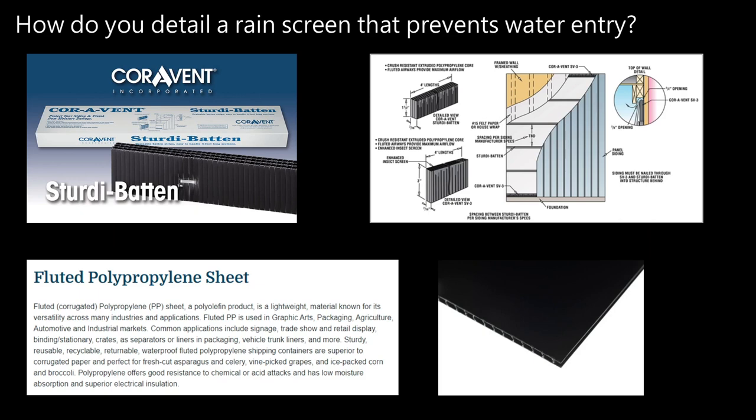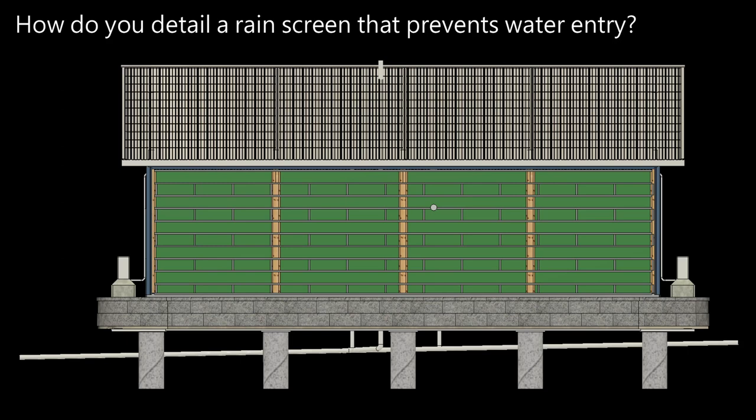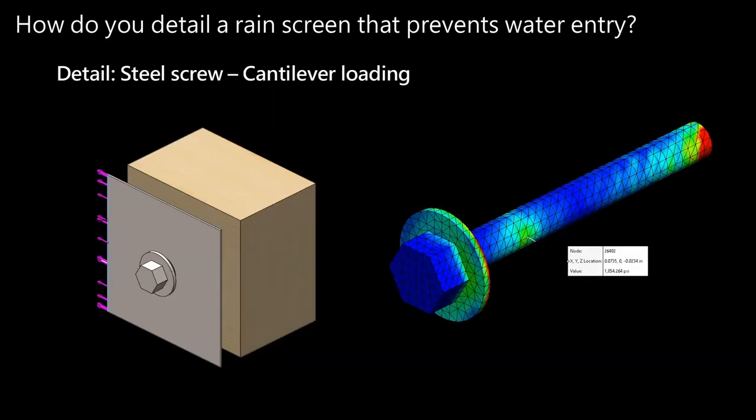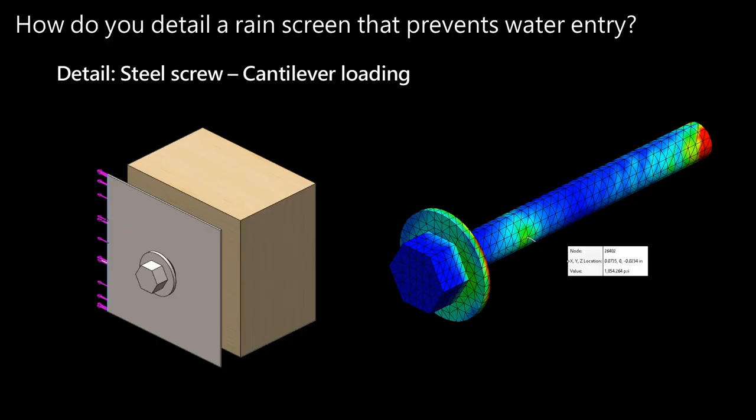For the custom rain screen details: a standard building can use Coravent sturdy batten, and for this build I plan to do something similar using a six millimeter corrugated polypropylene sheet. That goes behind the walls as a soap, providing a constant six millimeter gap functioning as a rain screen. Spacing the screws out by an extra six millimeters, I checked the loading via FEA — starting with the tear-out resistance of the steel as a load and applying it to the screw in bending. The actual stress levels are still only around 2,000 psi, which is not bad at all.